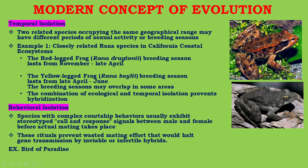Behavioral isolation: species with complex courtship behavior usually exhibit a serial call-and-response signal between male and female before actual mating takes place. These rituals prevent wasted mating effort that would halt gene transmission by inviable or infertile hybrids. For example, birds of paradise.